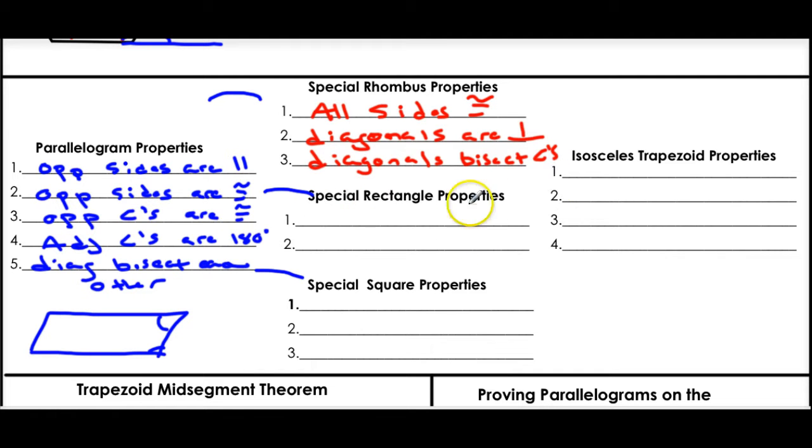The rectangle properties, the special ones for a rectangle, are just all angles are 90 degrees. So in a rectangle, if you could visualize that, remember, all the angles are 90. And it's always good to draw a picture if you don't know what I'm talking about. And the diagonals are congruent.